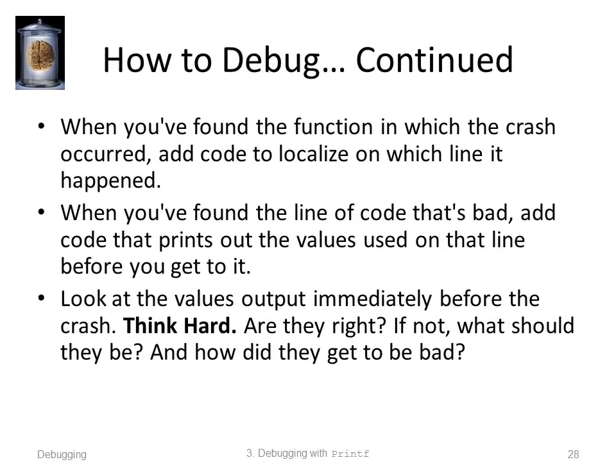When you've found the function in which the crash occurs, add code to localize on which line it happens. Put in a bunch of printfs until you find the line — and remember to use binary search. Put a printf in the middle of the function; if the crash happens before that, put one a quarter of the way through, et cetera. When you've found the line of code that's bad, add code that prints out the values used on that line right before you get to it. Look at those values and think hard: are they right? Are they what you're expecting? If not, what should they be, and how did they get to be bad? The crash happened here, but the thing that needs to be corrected may be someplace else.